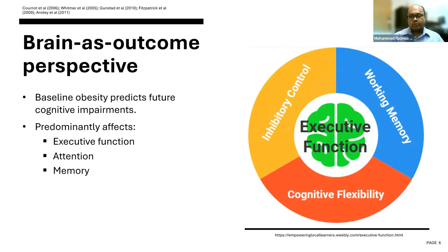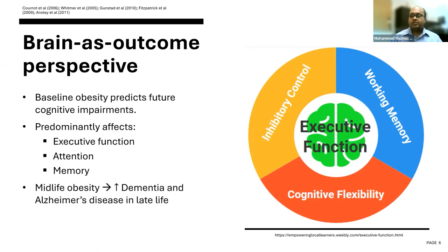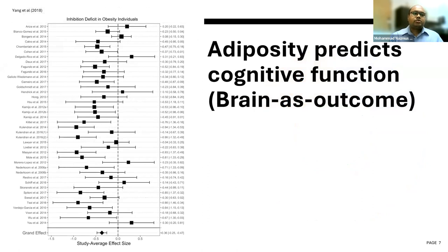Executive function has several domains, for example, inhibitory control, working memory, and cognitive flexibility, and each of these domains can be affected by the adverse effects of excess adiposity. Previous studies also reported that if individuals have obesity in midlife, it can substantially increase the risk of dementia and Alzheimer's disease in late life, further extending the evidence for the brain-as-outcome perspective. In the literature, there is abundant evidence for this perspective, and meta-analyses of those studies have revealed similar findings.